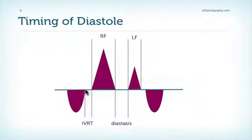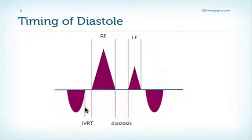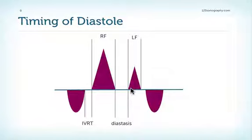This diagram, which resembles a Doppler tracing recording the velocity across the aortic valve and the mitral valve, shows you when the different time intervals actually occur. Systole is followed by the isovolumetric relaxation time, then we have early rapid ventricular filling, which is followed by diastasis where no filling occurs. Finally, we have atrial contraction, which leads to active filling of the left ventricle. This is then followed by the pre-ejection period and systole again.